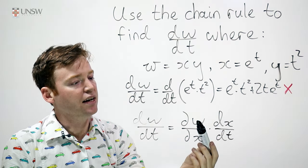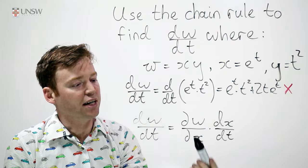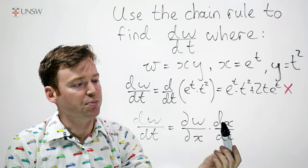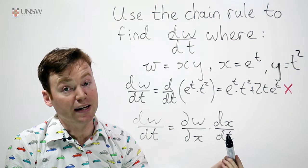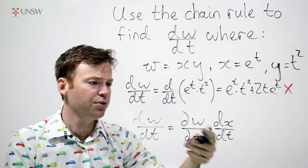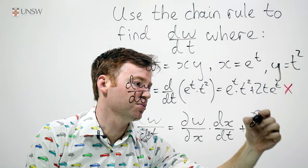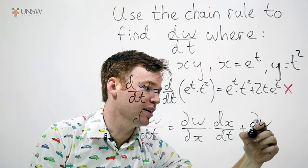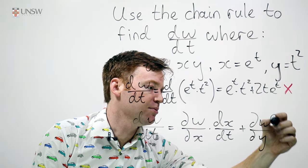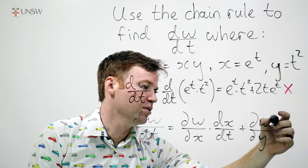And what this is saying is it's the amount w changes when you change x times by the amount x changes when you change t. Good. And you just add these all up for all the different variables. So this is partial w with respect to y now times the amount that y changes when t varies.